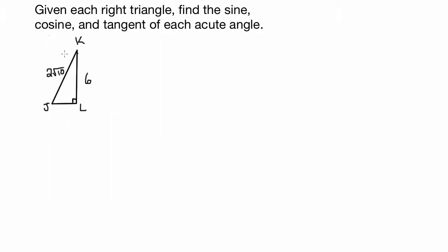Right away you probably noticed that I know two of the side lengths. I know that the hypotenuse is 2 root 10, and I know that the long leg is 6, but I don't know what the short leg is. So before I can do anything, I need to figure out what that is, because in order to get the sine, cosine, and tangent of each acute angle, I'm going to need to know the measures of all of the sides.